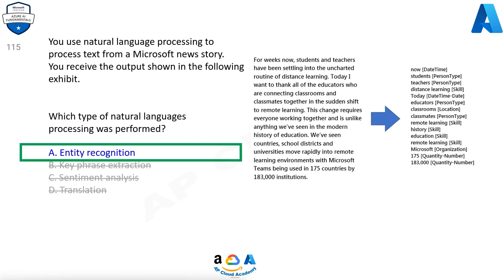Answer: A. Named entity recognition (NER) is the ability to identify different entities in text and categorize them into predefined classes or types such as person, location, event, product, and organization. In this question, the square brackets indicate the entities such as date-time, person type, and skill.